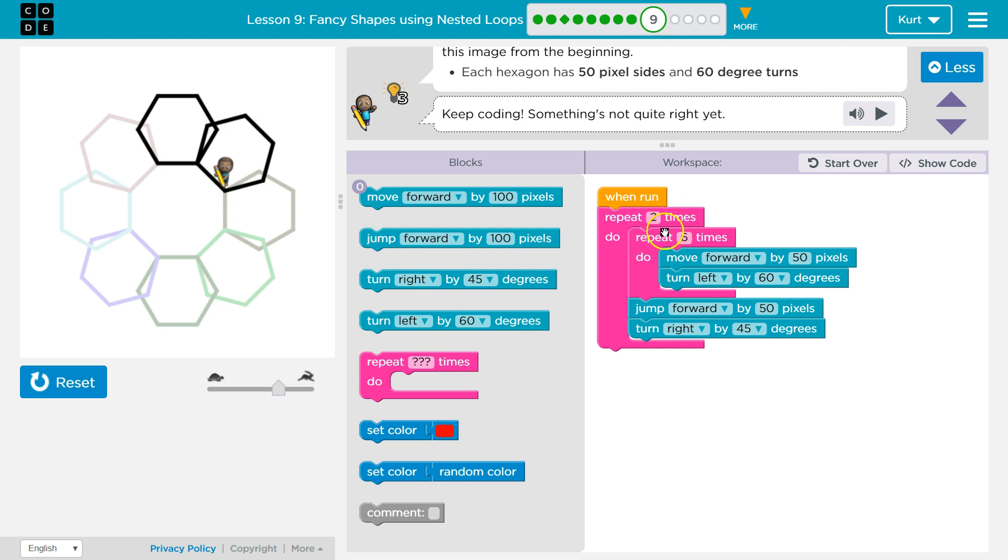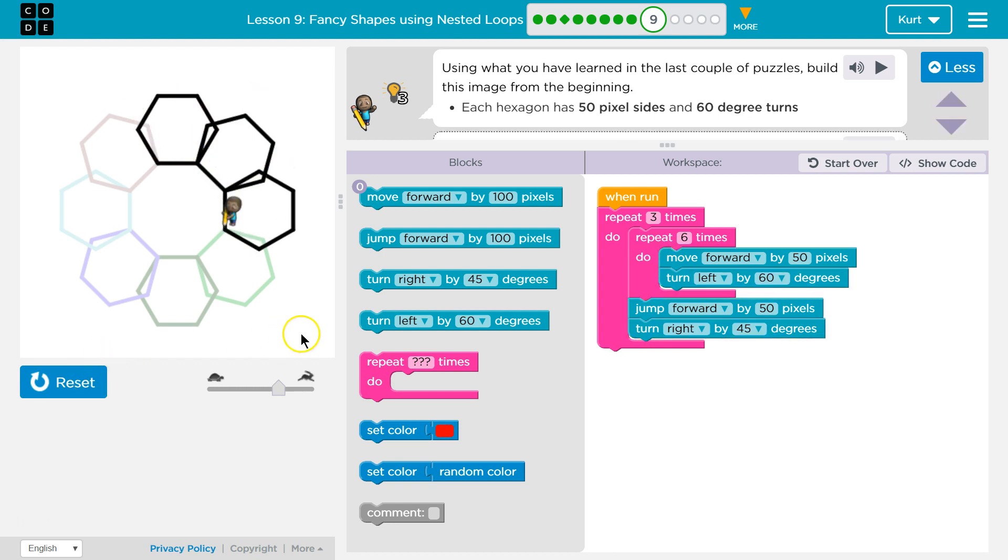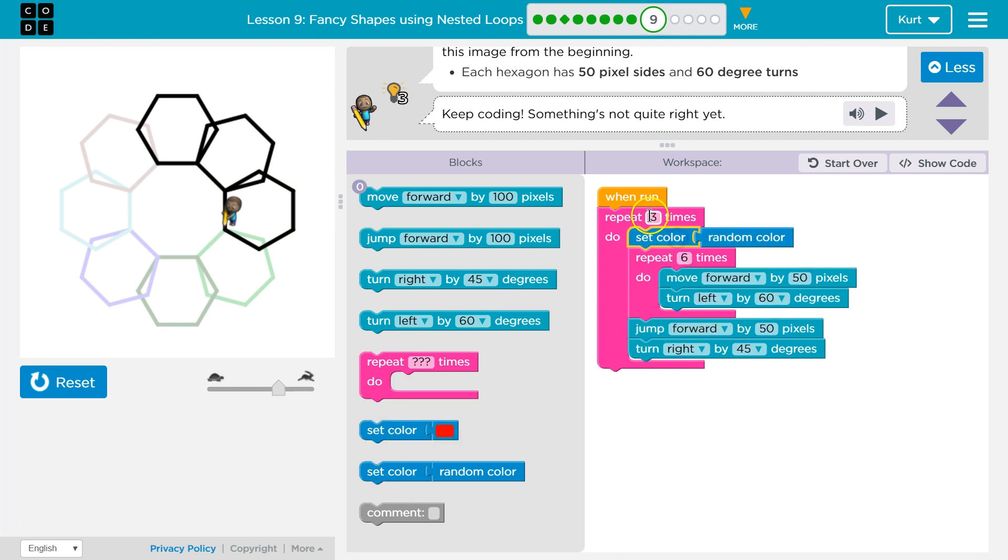Let's see what this does. That's looking good. Let's see what three looks like. We definitely have it. Let's set a random color up here. And how many do we need? Four, five, six, seven, eight. Eight. Let's see.